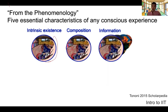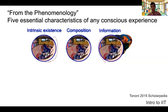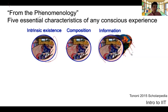Another aspect is information. Information in IIT is a bit different from information in other senses. It means informativeness or differentiation among many possible experiences you could have. Any moment of experience is informative because of the way it is — it is very different from any other possible moment of experience. We also talk about it as a reduction of uncertainty among all possible experiences to one particular experience.